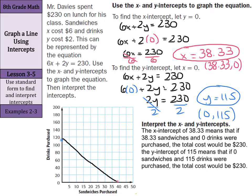So anywhere else on this line between the drinks and the sandwiches represents the $230. But on the y-intercept, that would be 115 drinks and no sandwiches versus the 38.33 sandwiches and no drinks. Most likely, he was somewhere else on this line.